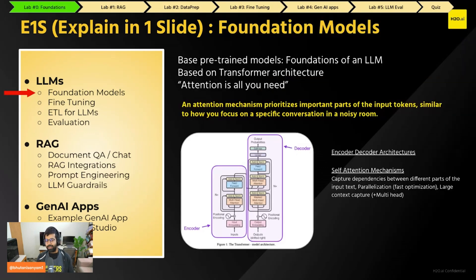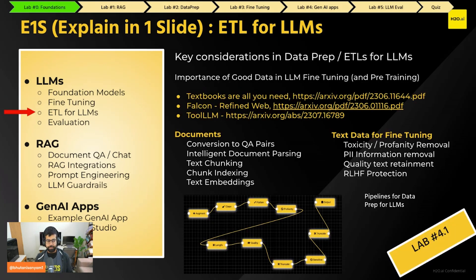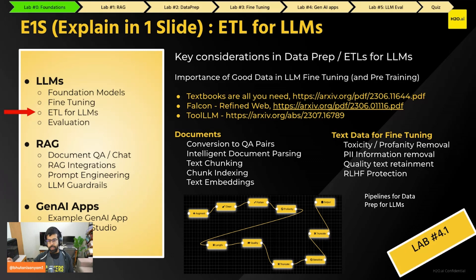All of these model architectures are based on the powerful and famous attention architecture. Some have an encoder and decoder architecture, while some LLMs only have a decoder architecture. People often assume all LLMs have an encoder and decoder, but that's not always true — some have just a decoder. When creating datasets for LLMs, you need chat examples, proper chunking and embeddings, and removal of profanity and sensitive information. We'll look at how to do that in the second lab.